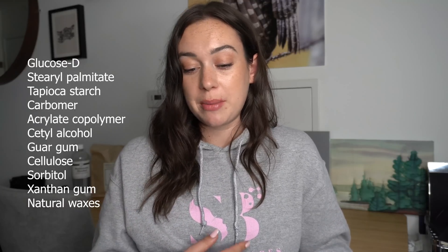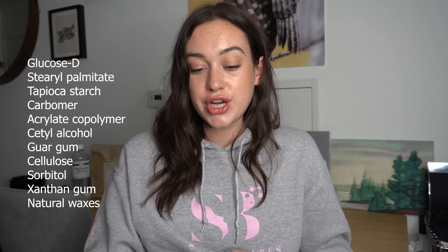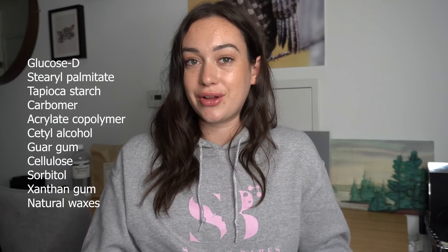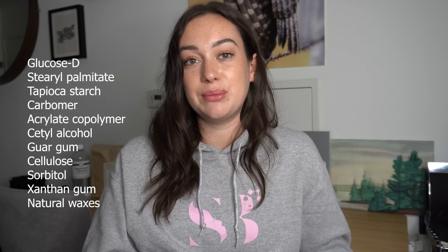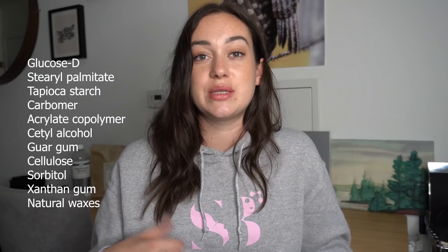Next we have thickeners. They either gel up and thicken a water formulation, or they're more like waxes that thicken an oil solution, cream, or lotion. Examples include glucose, stearyl palmitate, tapioca starch, carbomer, acrylate copolymer, cetyl alcohol, guar gum, cellulose, sorbitol, xanthan gum, and natural waxes such as beeswax, candelilla wax, and carnauba wax.